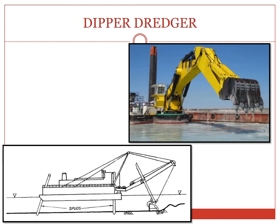Moving across to a dipper dredger. It consists of a floating vessel strongly constructed, carrying an inclined frame. It has a revolving boom, dipper stick, and hoisting cable. The dredger is very powerful and capable of excavating in hard soil, boulder beds, and rocks. These dredgers are capable of digging to a depth of up to 15 to 20 meters underwater. They have a maximum dumping range of about 35 meters.